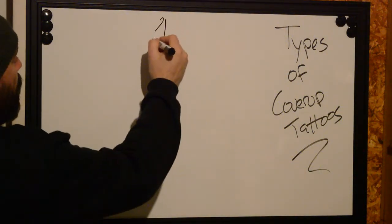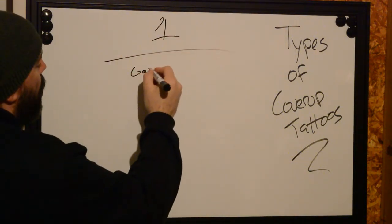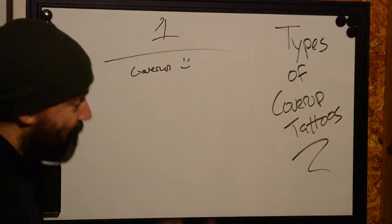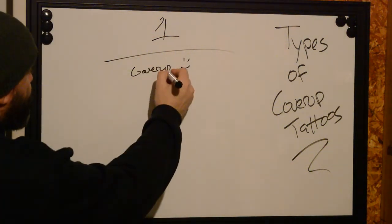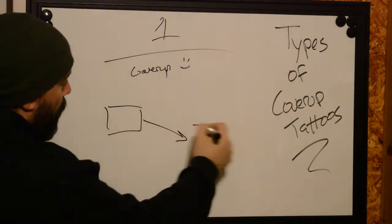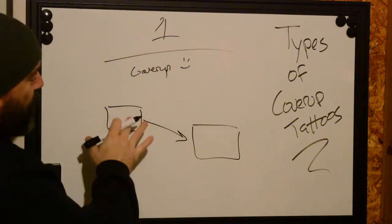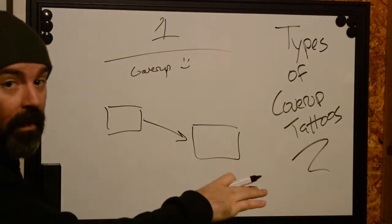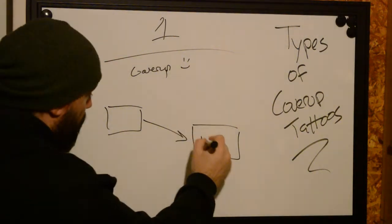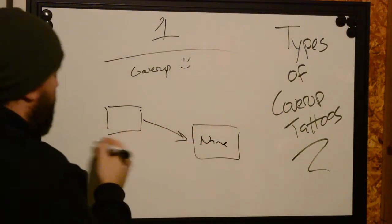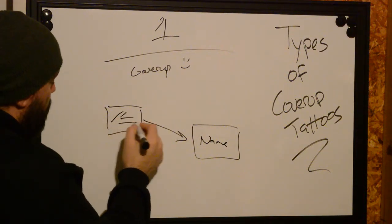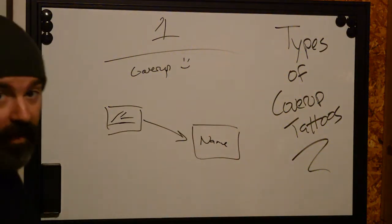First one, number one, is going to be a cover-up. Big surprise, right? A cover-up tattoo is simply where you take an image that you design and put it directly on top of another one. It could be anything. Whatever your bad tattoo is, it's a name or something. It's there and you're taking, I don't know, a stick and you're putting it over top of it.